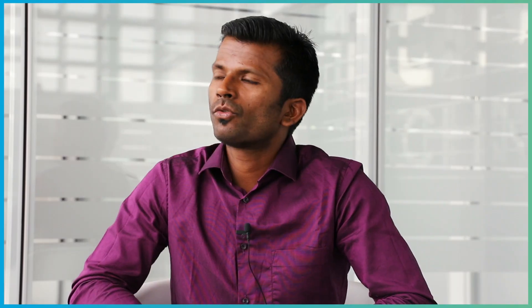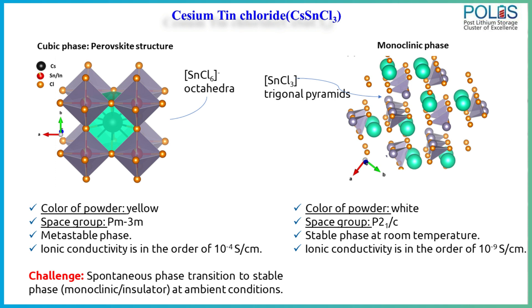Finding a stable solid electrolyte material was the first challenge. The second challenge was that cesium tin chloride is a very metastable material which tends to always transform into a very insulating monoclinic phase, so stabilizing it in the cubic phase was a significant challenge addressed in this study.